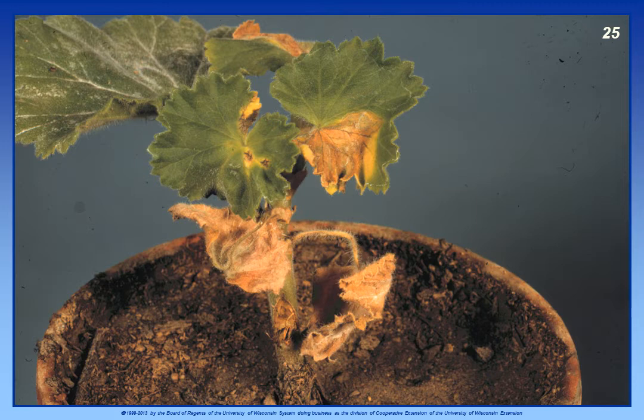Geraniums often harbor this particular bacterium without showing symptoms, and it's only over time that the bacterial population increases to the point where infection and disease occur. The best way to manage this particular disease is simply to discard infected plants. There's really no way to clean them up or cure the plants once they have this bacterial disease, and you don't want to keep them around because potentially the bacterium could get transferred to healthy plants. Once you've discarded the plants, you need to decontaminate using a 10% bleach solution or 70% alcohol — decontaminate pots, any surfaces that may have come into contact with the infected plants, or any other objects or surfaces that may be contaminated.